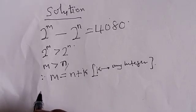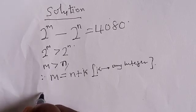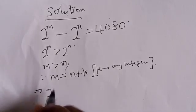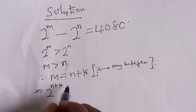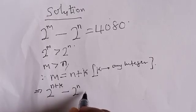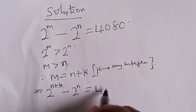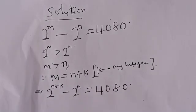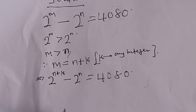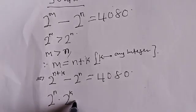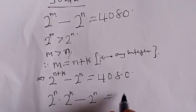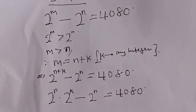This implies that anywhere you see m, you put n plus k. So we have 2 raised to power (n plus k) minus 2 raised to power n is equal to 4080. Then 2 raised to power (n plus k) can also be written as 2 raised to power n multiplied by 2 raised to power k, minus 2 raised to power n, is equal to 4080.